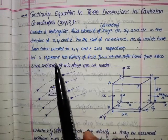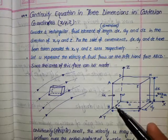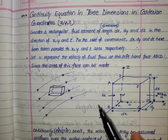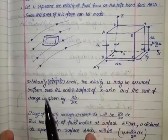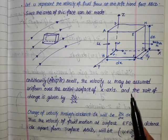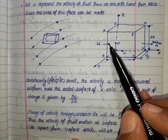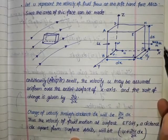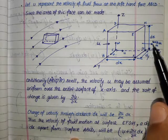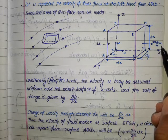Let u represent the velocity of fluid flow at the left-hand face ABCD. The area of this face can be made arbitrarily small, and velocity u may be assumed uniform over the entire surface. The rate of change is given by ∂u/∂x. At the outlet face EFGH the velocity becomes u plus (∂u/∂x)·dx.